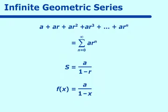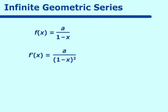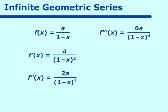If f(x) is equal to A over 1 minus x, then f prime of x is equal to A over (1 minus x) squared. F double prime of x is equal to 2A over (1 minus x) cubed. F triple prime of x is equal to 6A over (1 minus x) to the fourth power. Continuing this, we get f to the nth derivative of x is equal to n factorial times A over (1 minus x) to the n plus 1.